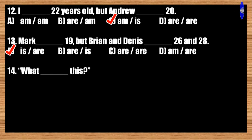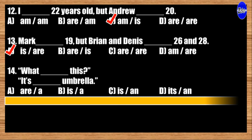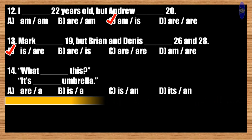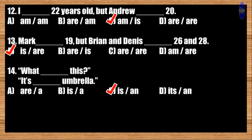Number fourteen: What blank is this? It's blank umbrella. A: are, a; B: is, a; C: is, an; D: it's, an. The correct answer is option C. What is this? It's an umbrella.